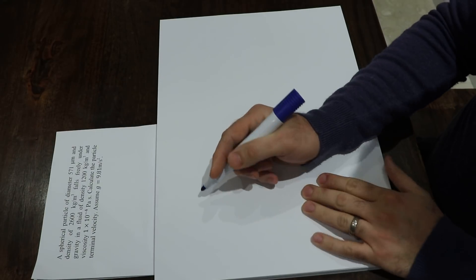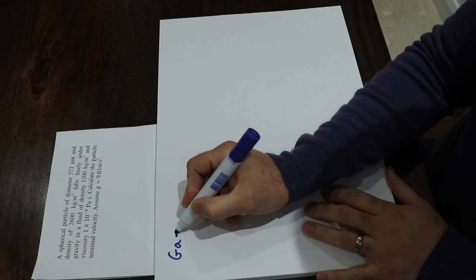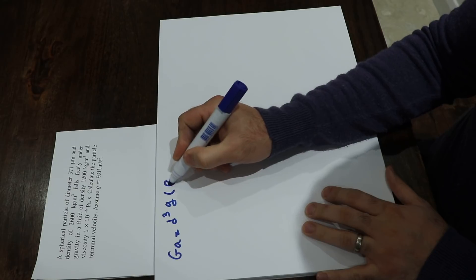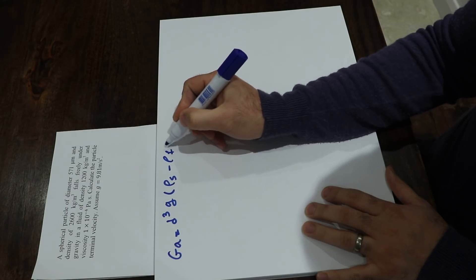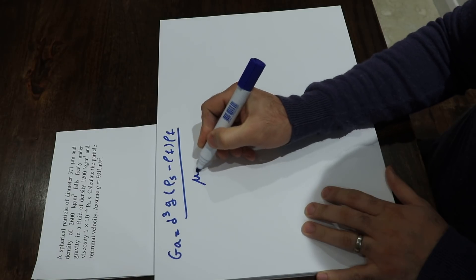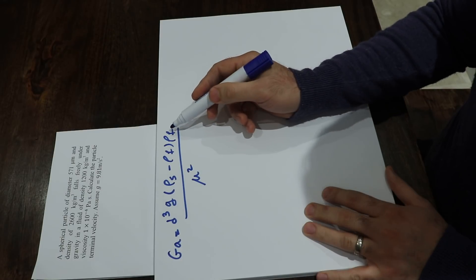To solve this question, you first need to calculate the Galileo number. We know that the Galileo number is equal to d cubed g times rho s minus rho f times rho f divided by mu square. All these parameters are given in the question, so you just need to substitute the values into this equation to calculate the Galileo number.